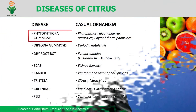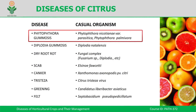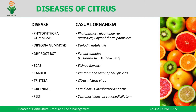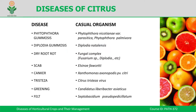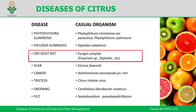First we will see the most important diseases, the causative agents, and later we will go one by one in detail. Phytophthora gummosis is one of the most important diseases. It is caused by Phytophthora nicotiana variety parasitica and also Phytophthora palmivora. The second disease is Diplodia gummosis, caused by Diplodia natalensis. The third one is Dry root rot, caused by a fungal complex including Fusarium, Diplodia, and so on.